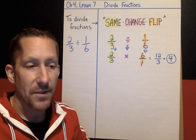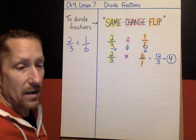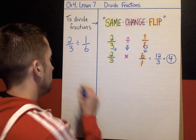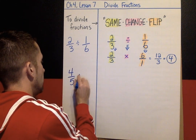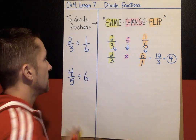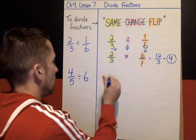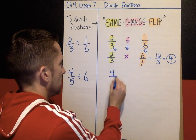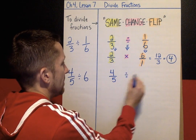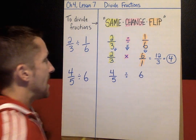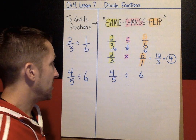Let's do one more example: 4/5 divided by 6. I'm first going to copy the problem — 4/5 divided by 6 — and now I'm going to use the Same Change Flip strategy.